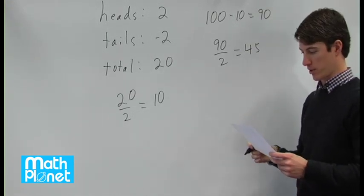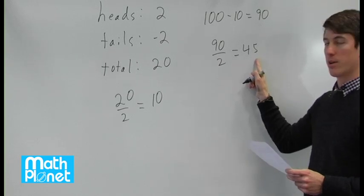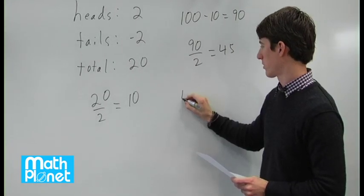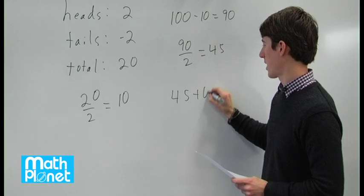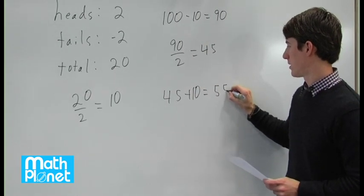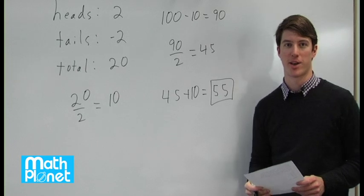So the total number of tosses and heads must be 45 plus this 10. So 45 plus 10 gives us a total of 55 heads tossed.